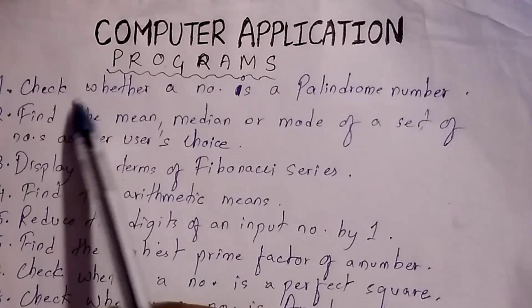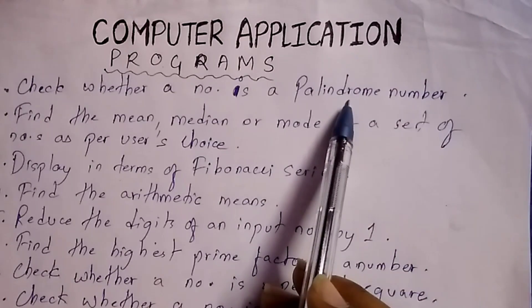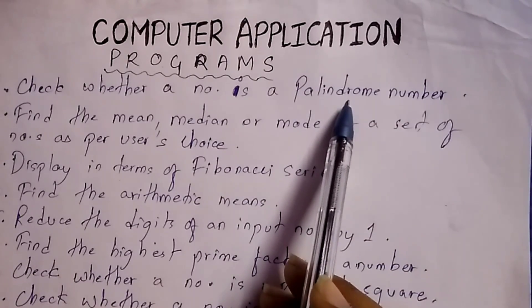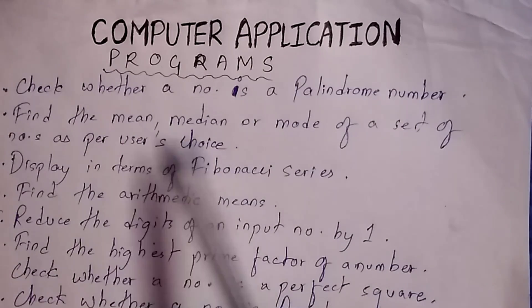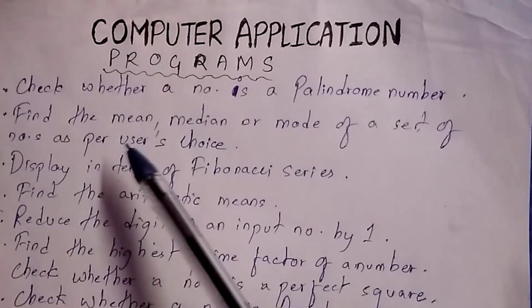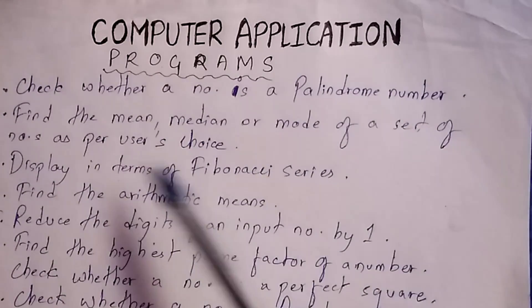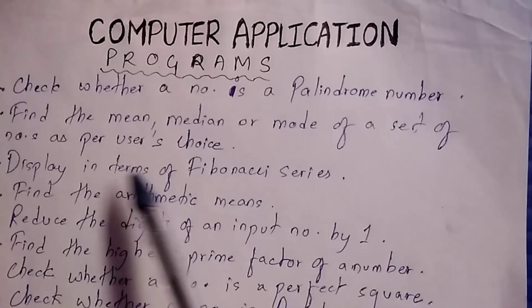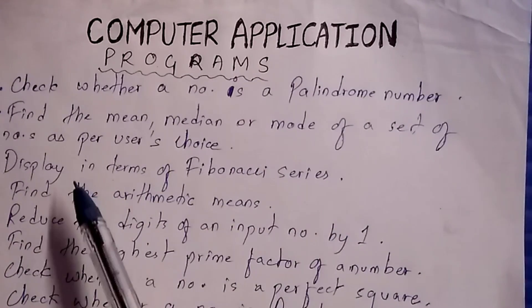The first one is check whether a number is a palindrome number. This is important, most of the time it is repeated in your board exams. After that, find the mean, median, or mode of a set of numbers as per user's choice. After that, display in terms of Fibonacci series. This is important.